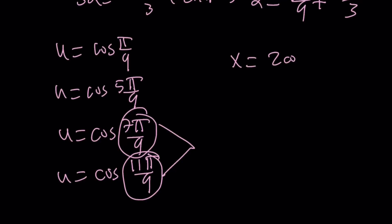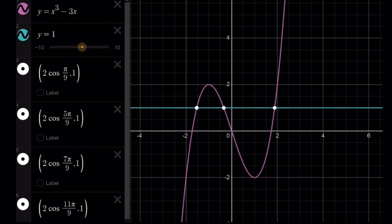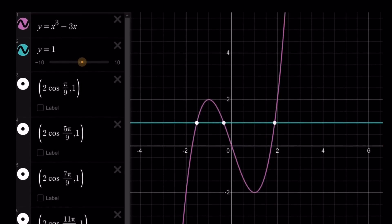x is going to be 2cos(π/9). x is going to be 2cos(5π/9). And then x is going to be 2cos(7π/9). And here is the graph of the situation, showing you all the intersection points. You do see 4 coordinates, but 3 intersection points. And this brings us to the end of this video.